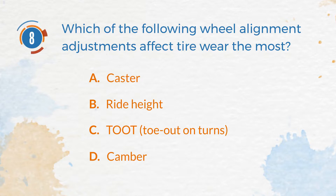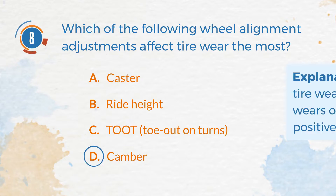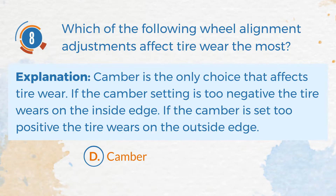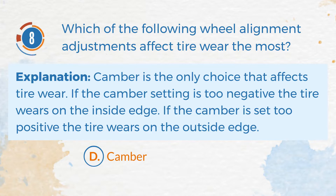The correct answer is D. Camber. Explanation: Camber is the only choice that affects tire wear. If the camber setting is too negative, the tire wears on the inside edge. If the camber is set too positive, the tire wears on the outside edge.